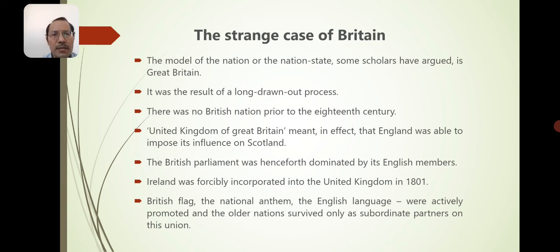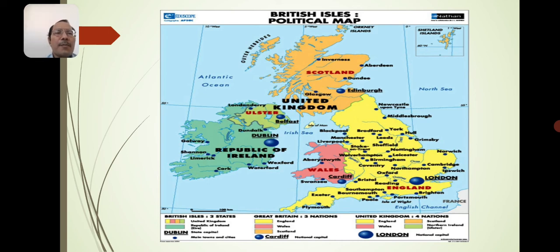The strange case of Britain: some scholars have argued that the model of the nation state is Great Britain. It was the result of a long drawn-out process. There was no British nation prior to the 18th century. United Kingdom of Great Britain meant that England was able to impose its influence on Scotland. The British Parliament was henceforth dominated by its English members. Ireland was forcibly incorporated into the United Kingdom in 1801, and the British flag, the national anthem, and the English language were actively promoted. The older nations survived only as subordinate partners in this union. In the political map of Britain, the yellow is England, the pink is Wales, on top is Scotland in green, the Republic of Ireland, and Northern Ireland — these are all the different parts of the United Kingdom.